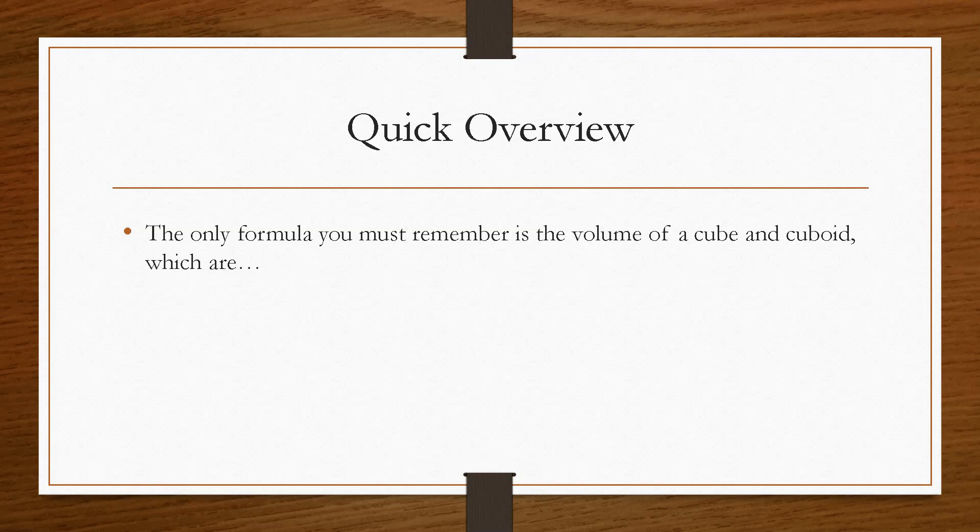So the formulas that you have to know is the cube and a cuboid, and they are as follows. So a cube, by definition, all the sides are the same length. So all you have to do is take one of the lengths, because they are all the same, and cube it. That will give you centimetres cubed.